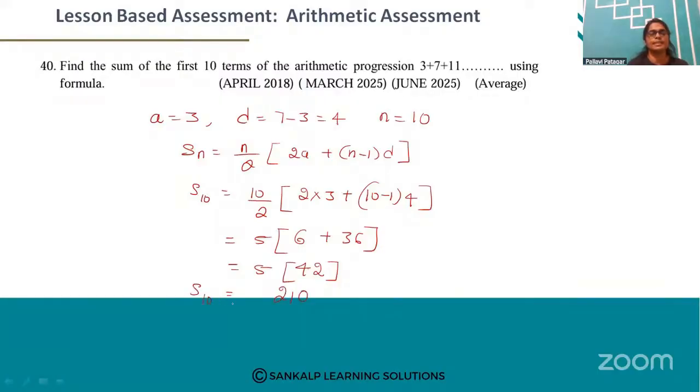The sum of the first 10 terms of the arithmetic progression is 210.